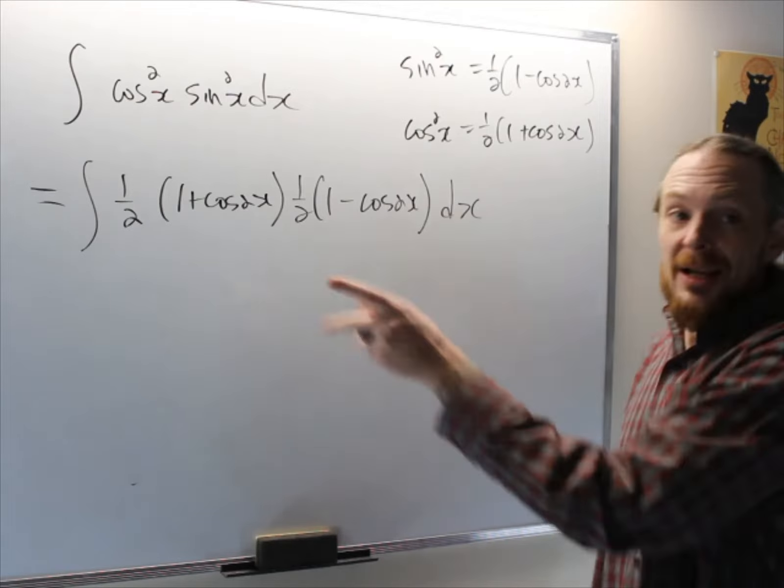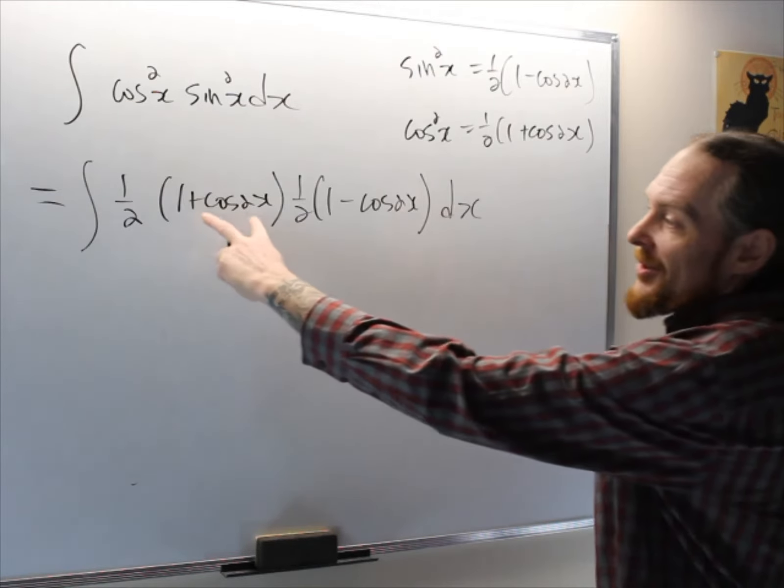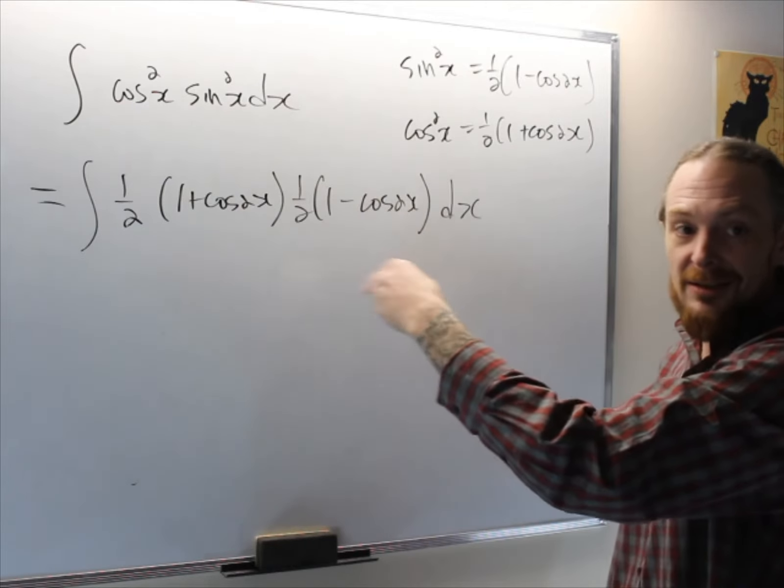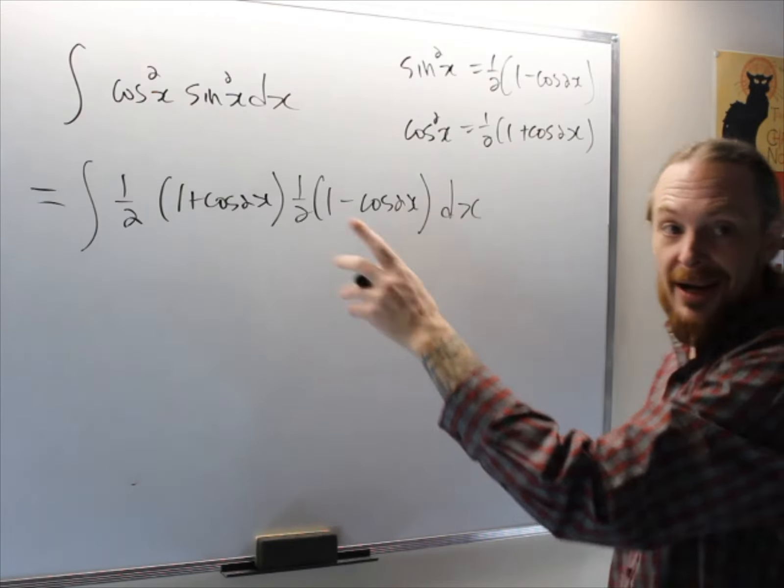So now what I'm going to do is clean it up, expand and foil this out. This is the difference of squares, this is a plus b, a minus b, so the middle terms are going to cancel. So when you see that, you're like, what happened there? I didn't use the difference of squares. You should be on this by now.